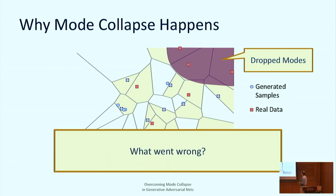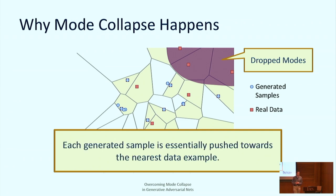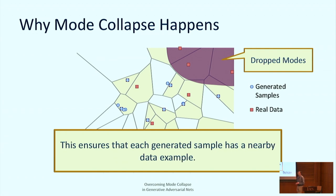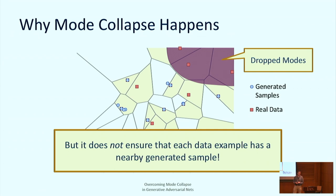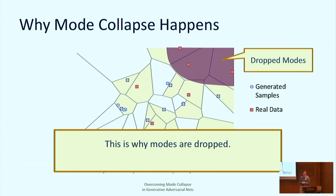Why did this happen? We pushed all generated samples toward the nearest data example, ensuring every generated sample has a nearby data example. But we did not ensure the opposite direction: that every data example has a nearby generated sample. That is why modes are being dropped.